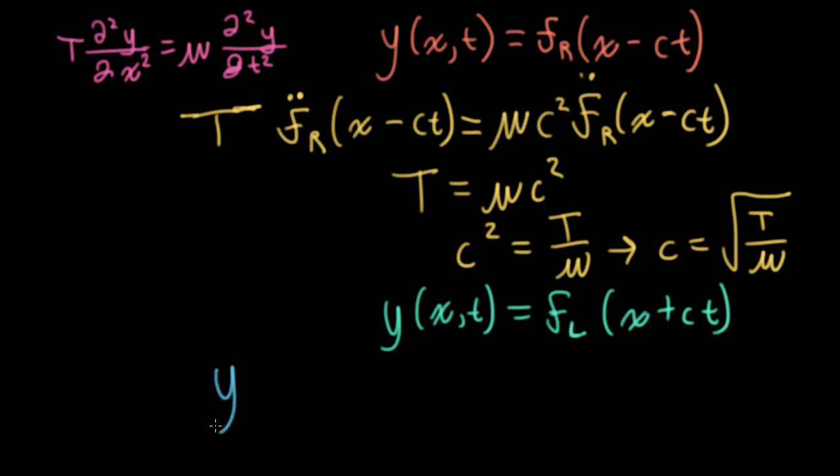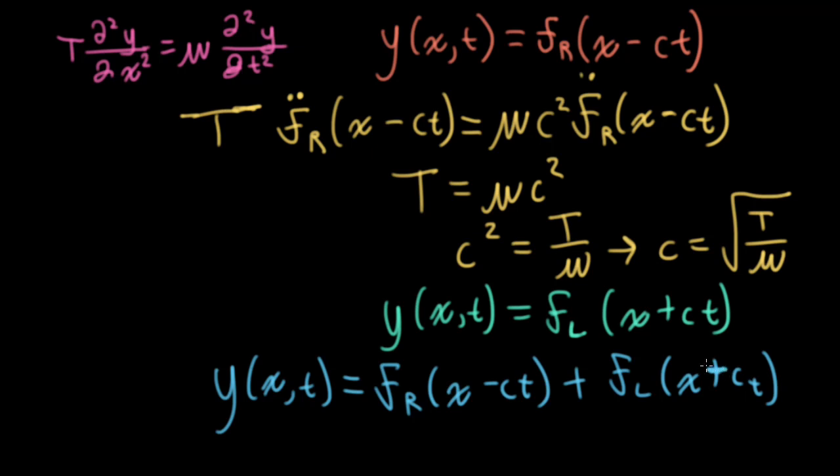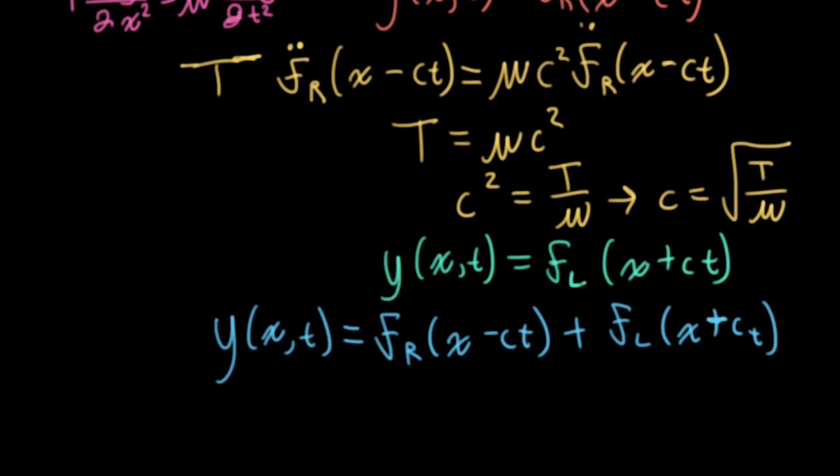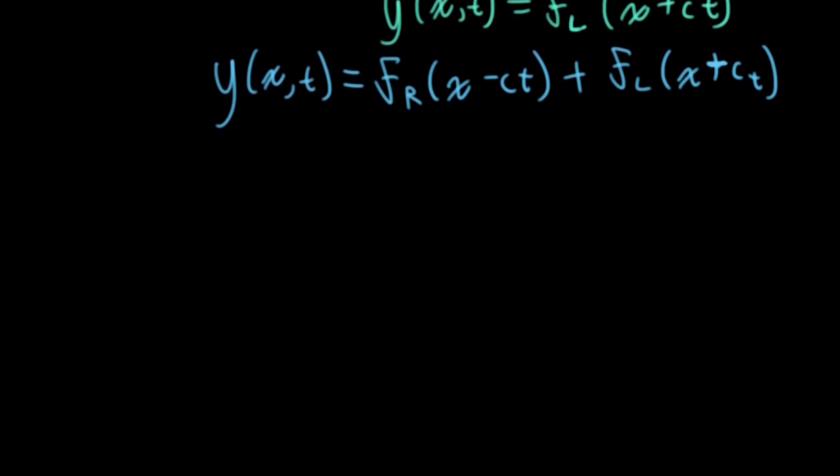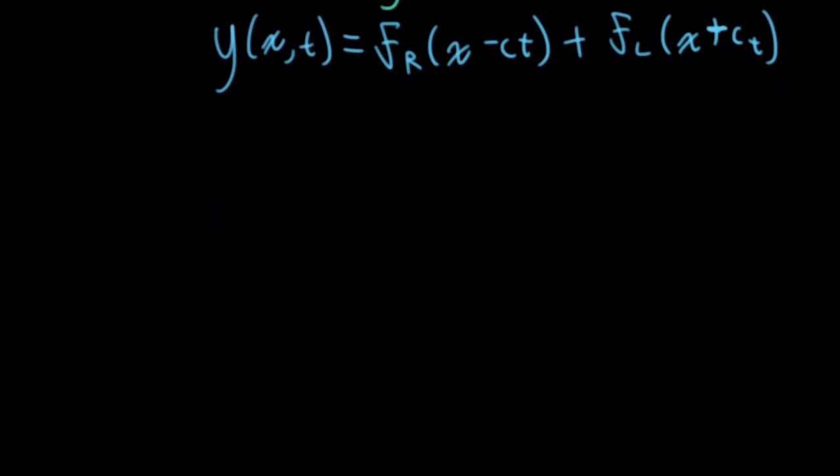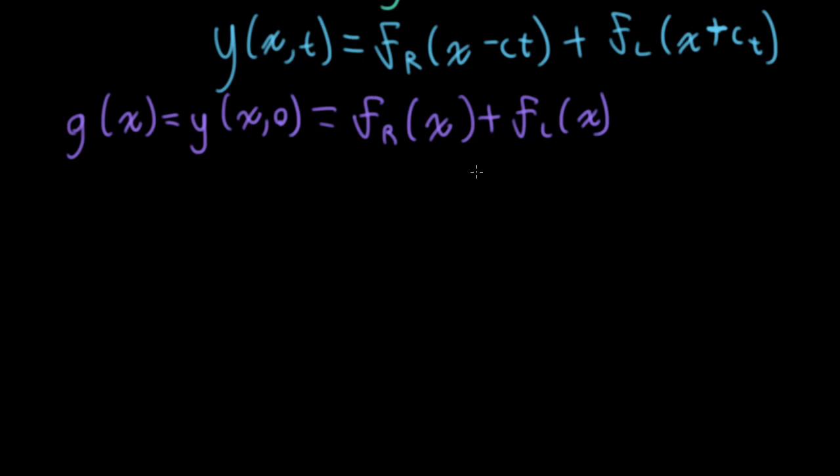So these are two possible solutions to my differential equation. So a general solution could involve a waveform that is traveling to the right, plus a waveform that is traveling to the left. Now let's think about how initial conditions might manifest themselves in this kind of formulation. So we've defined an initial condition gx as being the initial position of the string.